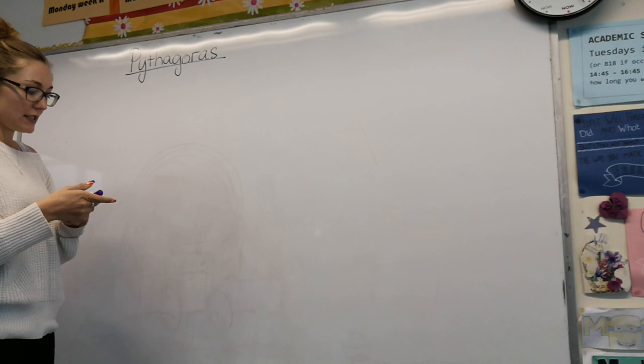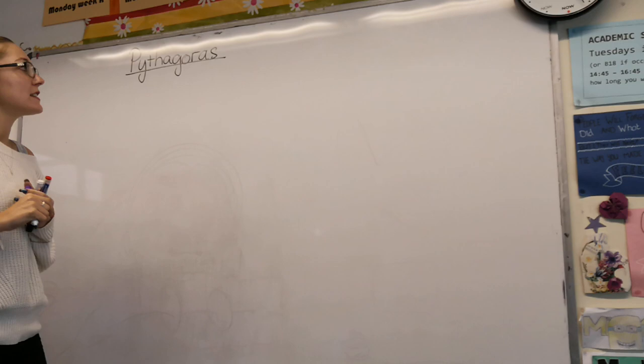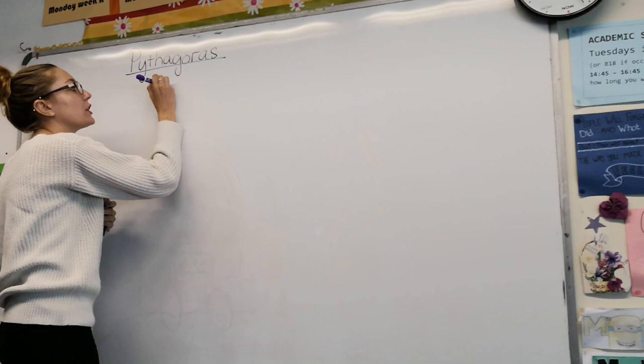Okay, great. So today we're going to look at Pythagoras' Theorem. Quick reminder, this is the theorem that we use. It's a mathematical formula in order to find the third side of a triangle if we know two of the sides.